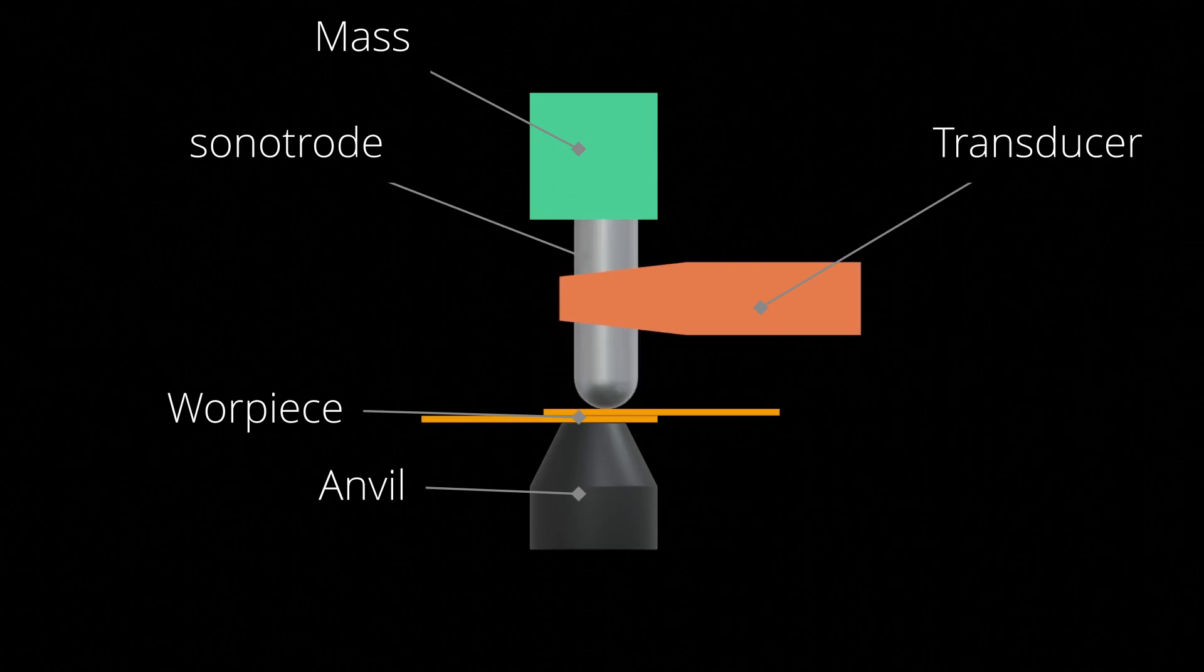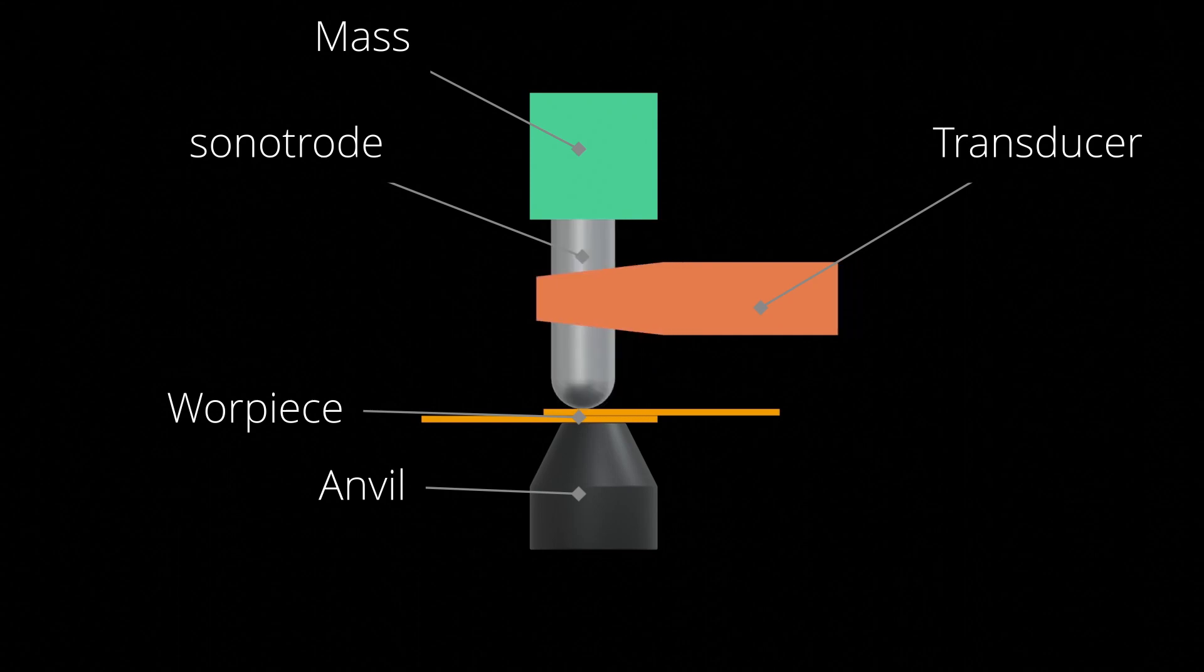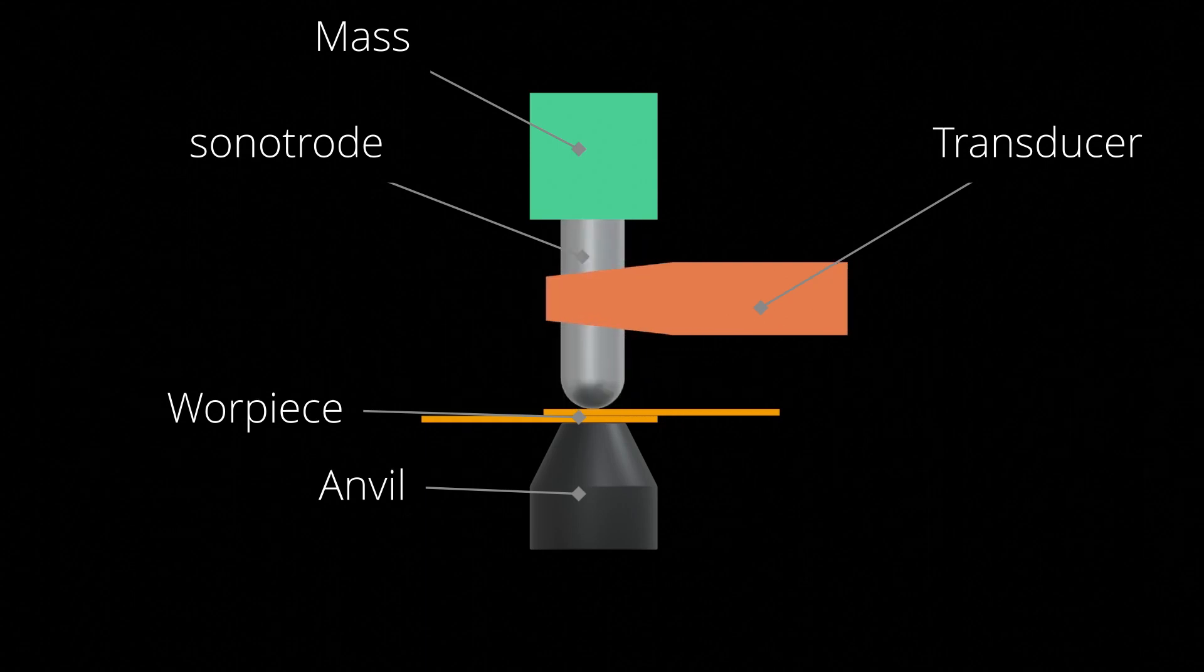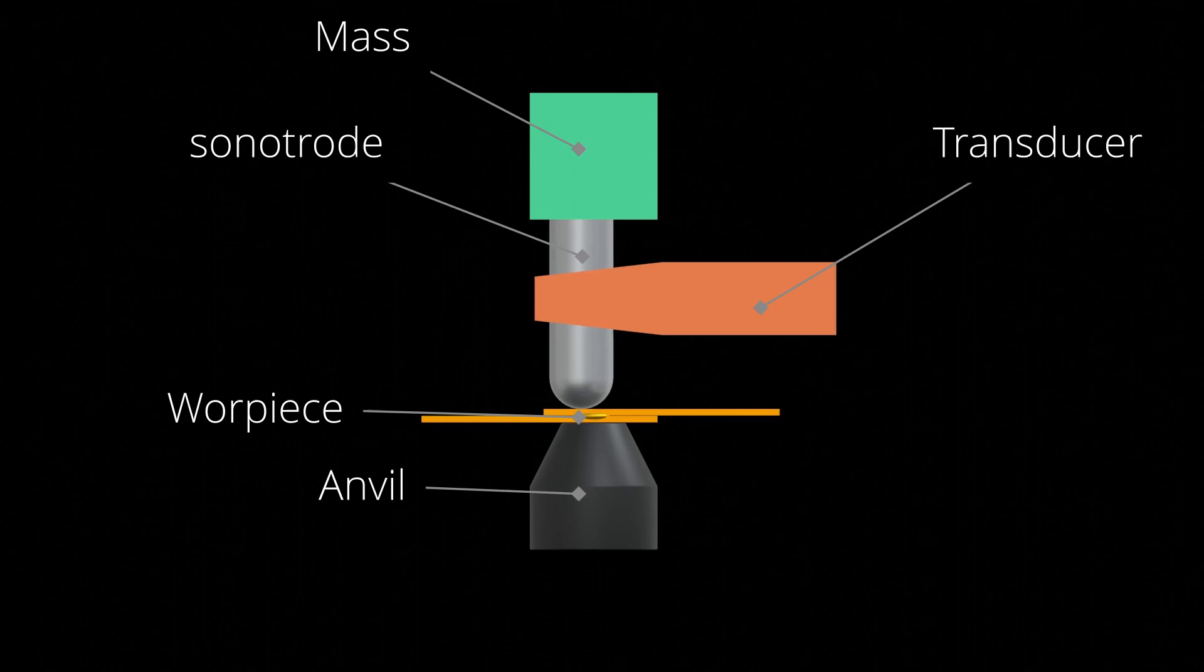The video illustrates that the workpieces experience oscillating shear stresses at ultrasonic frequencies, typically above 20 kHz. These oscillations occur approximately parallel to the interface's plane and last for a brief duration, typically less than one second.